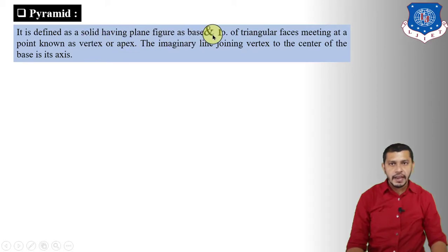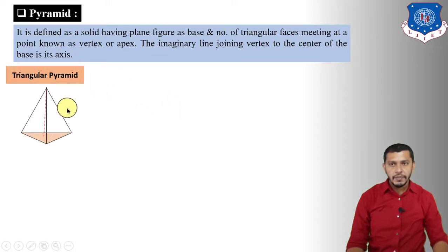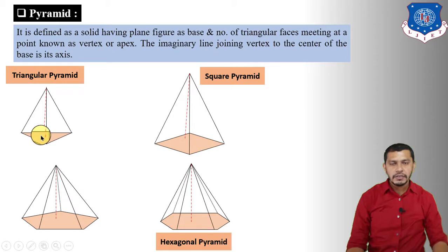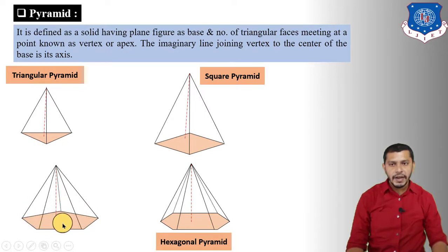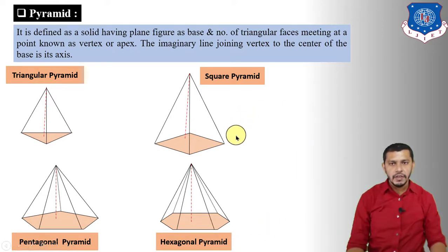A pyramid is defined as a solid having a plane figure as base with a number of triangular faces meeting at a point known as the vertex or apex. The imaginary line joining the vertex to the center of the base is known as the axis. Types include triangular, square, pentagonal, and hexagonal pyramids depending on the base shape.